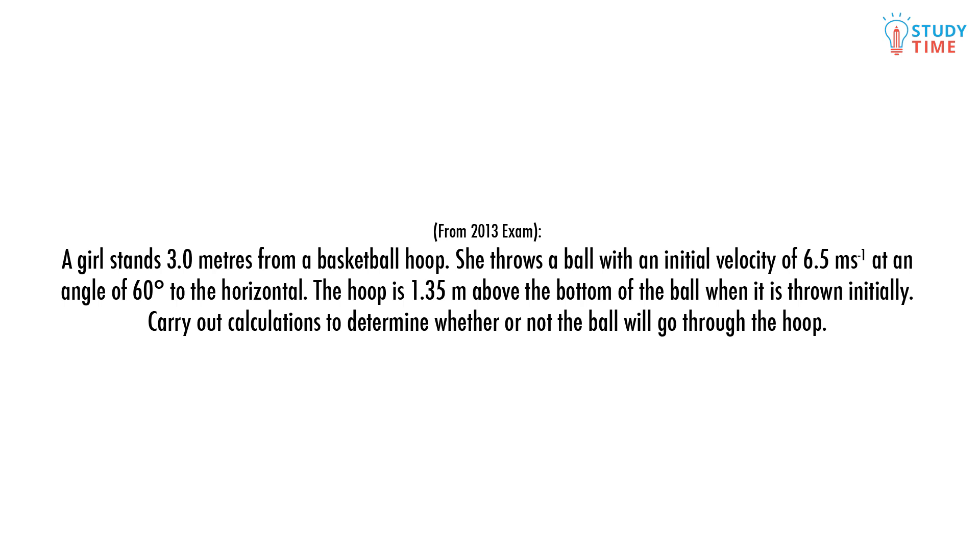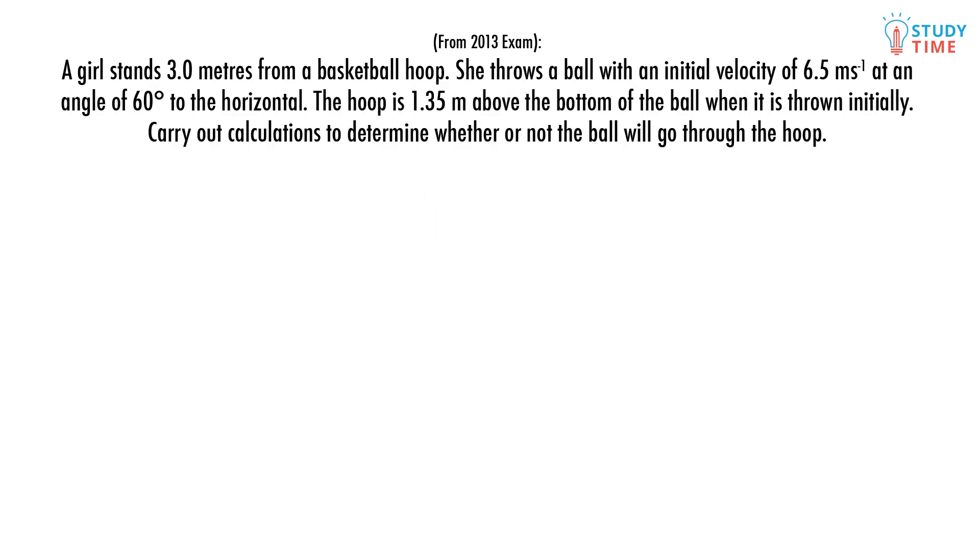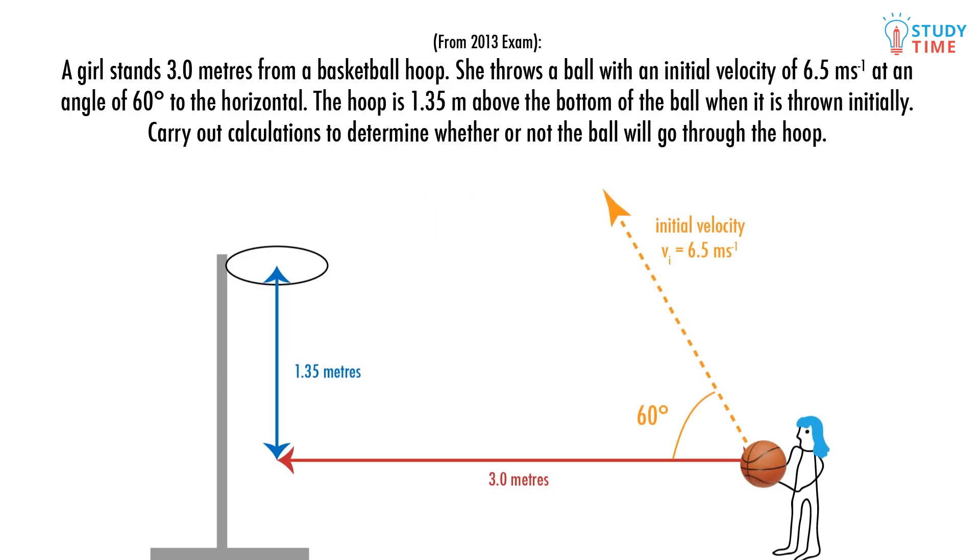A girl stands three meters from a basketball hoop. She throws a ball with an initial velocity of 6.5 meters per second at an angle of 60 degrees to the horizontal. The hoop is 1.35 meters above the bottom of the ball when it's initially thrown. Carry out calculations to determine whether or not the ball will go through the hoop.